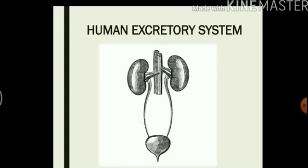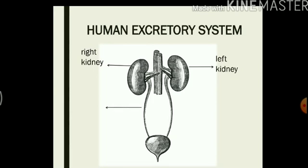This is how it looks. This organ on the right is called the right kidney and on the left we have the left kidney. Then we have these two pipes which are called the ureters. Then we have the bladder. And finally we have the urethra.